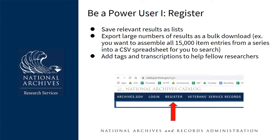For example, if there's a series of 15,000 items, you can export the descriptions as a CSV spreadsheet and have access to all 15,000 titles, scope and content notes, local identifiers, and any other information from their catalog pages. Registration also allows you to add tags and transcriptions to help fellow researchers. Our Citizen Archivist program periodically sends the public out on so-called missions to transcribe and tag under-described groups of records.